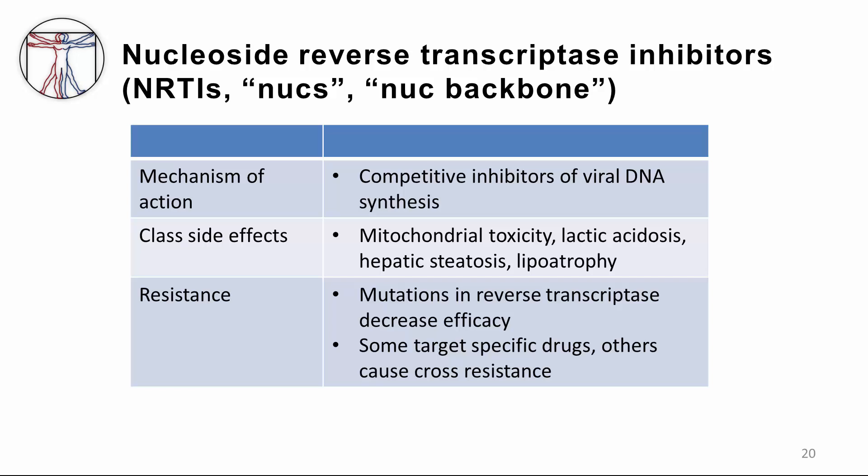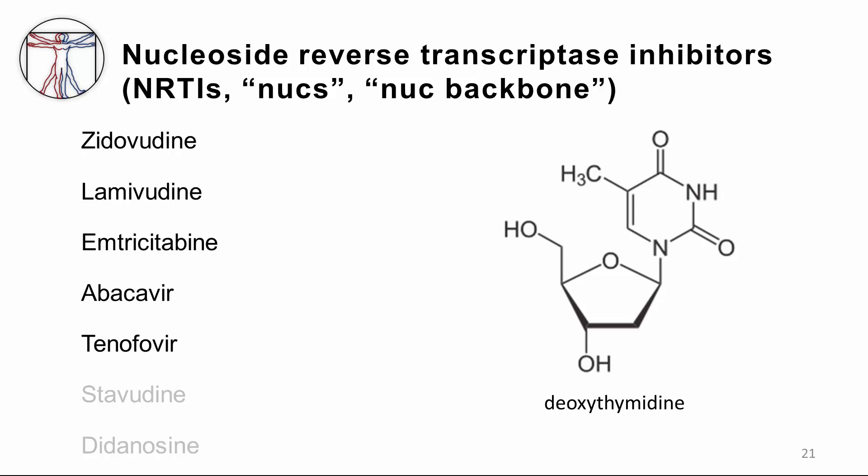Resistance in the NRTI class can occur when mutations in the reverse transcriptase decrease efficacy. Some mutations target specific drugs; other kinds of resistance can cause cross-resistance across the entire class. Examples of drugs in the NRTI class include zidovudine, lamivudine, emtricitabine, abacavir, and tenofovir. In order to be incorporated into viral DNA, NRTIs must all be activated by the addition of three phosphate groups to the deoxyribose structure. AZT is a thymidine analog that essentially terminates the HIV-forming DNA chain.